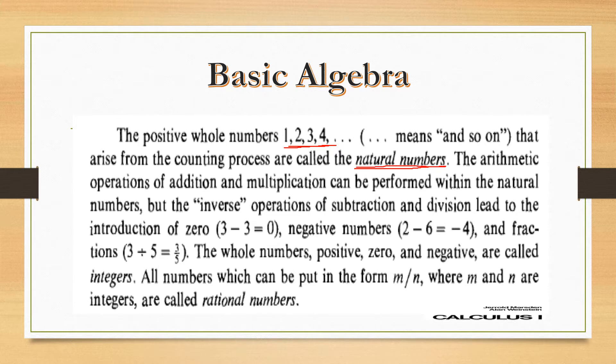Two operations — addition and multiplication — can be performed within the natural numbers. If we add two natural numbers, we will get another natural number, and if we multiply two natural numbers, we will again get another natural number.